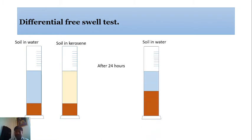After 24 hours, we measure the volume of the soil sample in the water measuring cylinder, and again we measure the volume of the soil sample in kerosene, which is denoted as Vk, and the volume of soil in water is denoted by Vw.